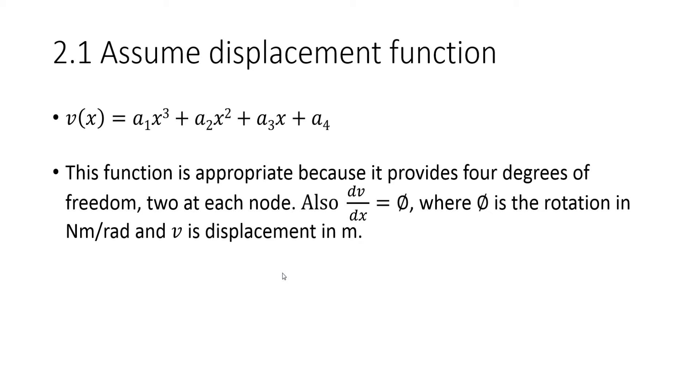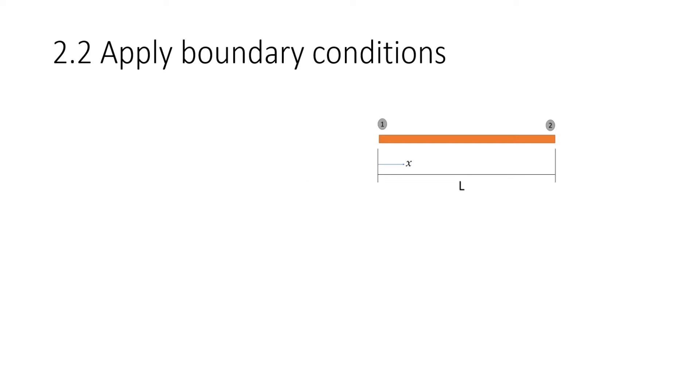Okay, next we need to apply boundary conditions. This is the schematic. X is measured from node 1 up until node 2. So the displacement at 0 is going to be V1 and that is going to be a4. When you plug 0 into the displacement function you get a4. And the derivative at node 1 is going to be the rotation at 1, which is equal to a3.